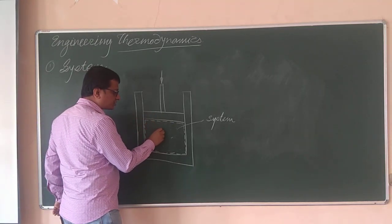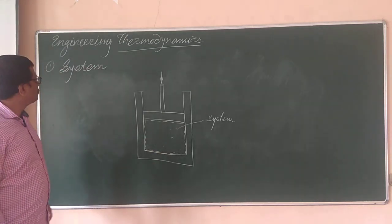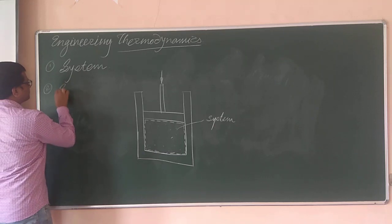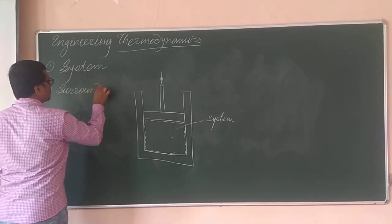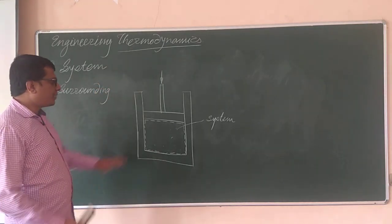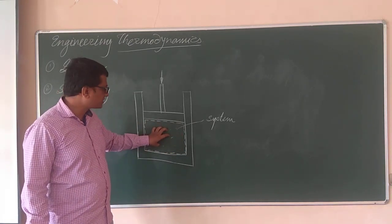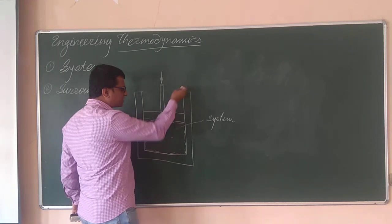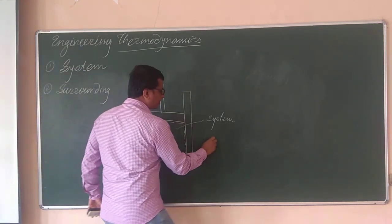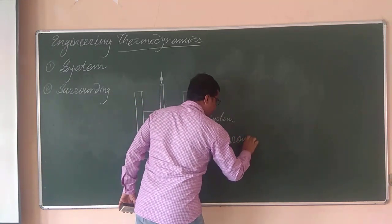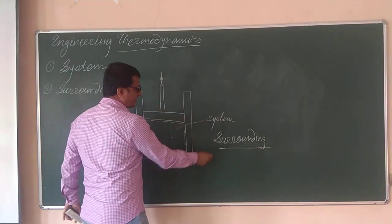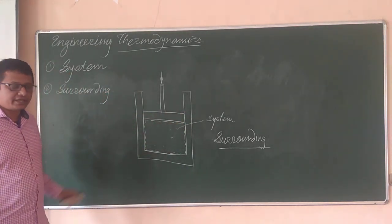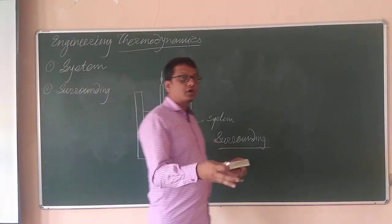So only the air inside is the system. Next terminology is surrounding. Surrounding means anything apart from the system. In the piston-cylinder case, anything in the space which is beyond the system — whatever matter is outside the system — that is the surrounding. So the surrounding air outside is the surrounding; even the cylinder wall and the piston are part of the surrounding, not part of the system.